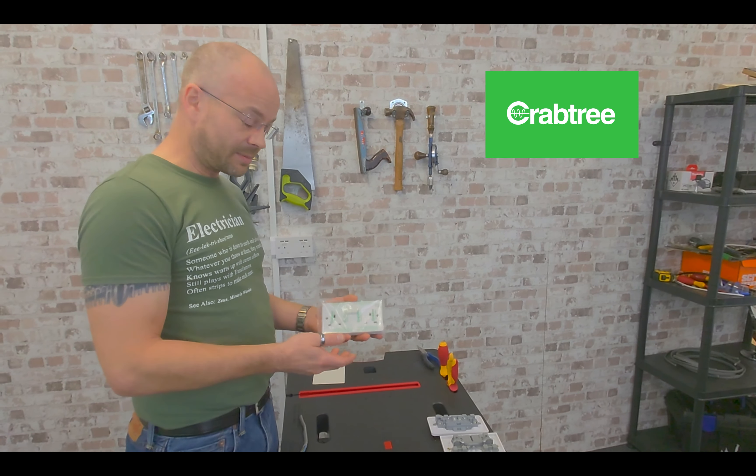So, as predicted, the unbranded one is the cheapest at £1.60. Now, this is a bit of a surprise to me as well. The Schneider, £2.09 is the second. Followed by the Lapp at £2.48. Then, wow, which is the Crabtree at £2.69, followed by the BG at £2.79.